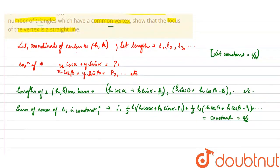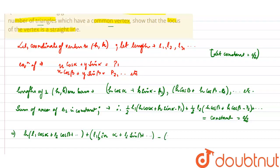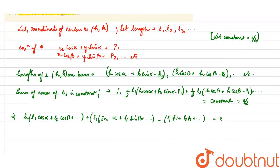So, we can say that the constant is equal to c by 2. Now, when we simplify this equation, we can say that h into (l1 cos alpha plus l2 cos beta plus ...) plus k into (l1 sin alpha plus l2 sin beta plus ...) minus (l1 p1 plus l2 p2 plus ...) equals c, because the half cancels out. After generalizing the equation, we can say that x times the summation of l1 cos alpha plus y times the summation of l1 sin alpha minus the summation of l1 p1 equals c.